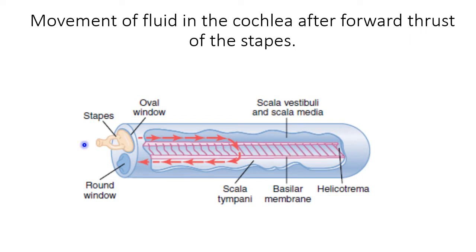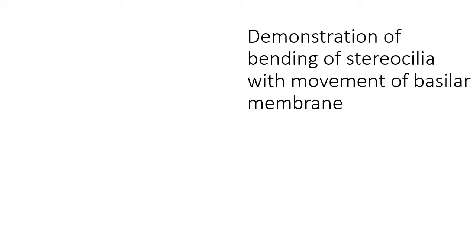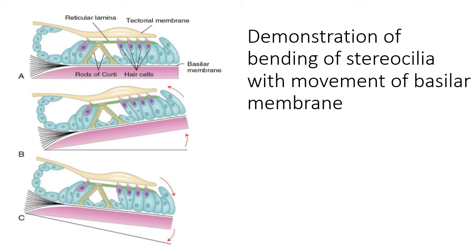When the footplate of the stapes moves backwards toward the middle ear, it creates a negative pressure, and the basilar membrane moves upwards, causing the hair cells to touch the tectorial membrane. In the next slide we are going to show how the hair cells touch the tectorial membrane when the basilar membrane moves upwards, stimulating the hair cells. In this diagram we show what happens to the stereocilia when the basilar membrane moves upwards and downwards.